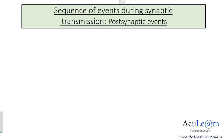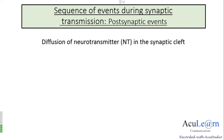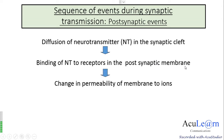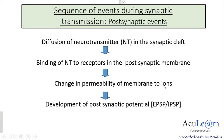The sequence of events during synaptic transmission — looking at the post-synaptic events: after being released from the pre-synaptic terminal, the neurotransmitter will diffuse in the synaptic cleft. The diffused neurotransmitter will then bind to the receptors in the post-synaptic membrane, and this will change the permeability of the membrane to ions.